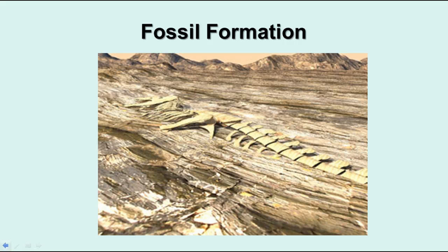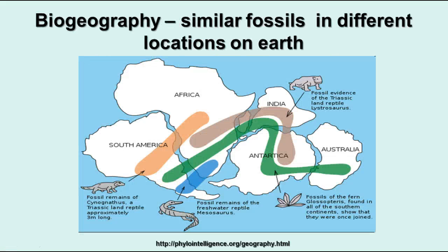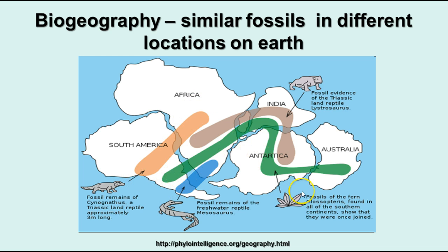Something that came out of the study of fossils was biogeography — when you find fossils of the same organism in different locations on Earth. Looking back into Earth's history when the continents were all together, you can see a definite relationship between things found in South America and Africa. For instance, the Cynognathus reptile was found in both South America and Africa. The Glossopteris fossil, an ancient fern plant, is found in South America, Africa, India, Antarctica, and Australia — making it obvious those landmasses were all connected at one time.